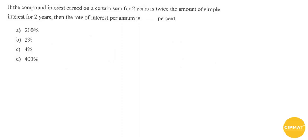If the compound interest earned on a certain sum for two years is twice the amount of simple interest earned for two years, then the rate of interest per annum in percentage will be what? This is a multiple choice question.